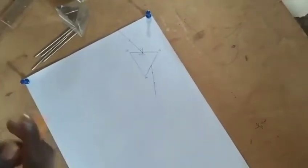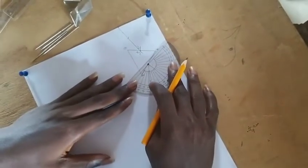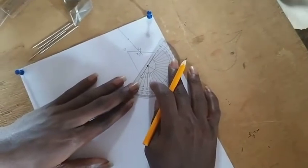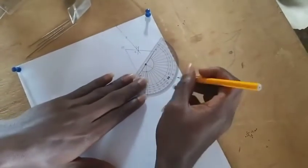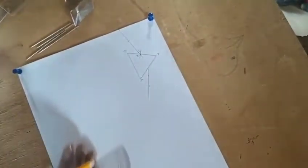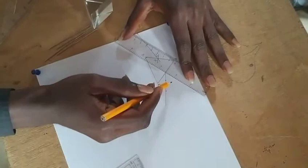Use the protractor to get the normal for that side as well. CD should be at 90 degrees. Use the ruler to draw it out to get the normal for the emergent side.